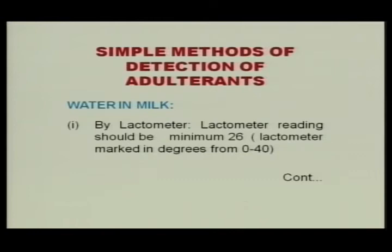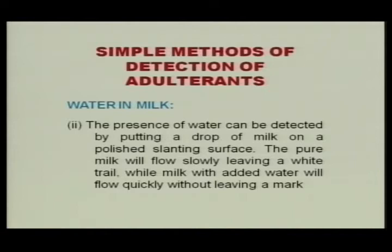Most adulterants can be detected at home. Water in milk can be tested by a lactometer — the lactometer reading should be minimum 26 (the lactometer is marked with degrees from 0 to 40). If the reading is less than 26, one can infer that the milk is adulterated with water. Another way of detection is using a slanted glass surface — if we drop a little quantity of milk on this slanting surface, pure milk will flow slowly leaving a white trail, while milk with added water will flow quickly without leaving any mark.